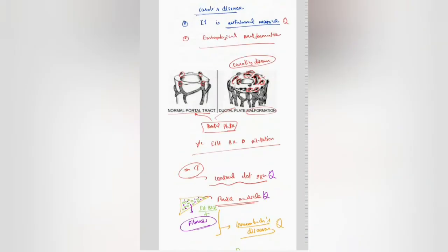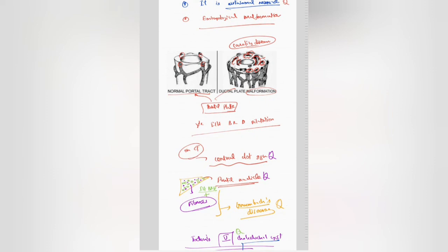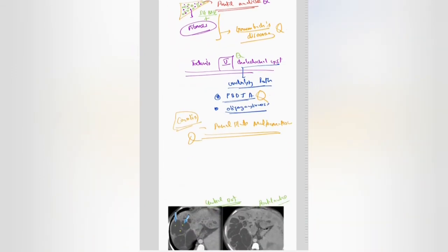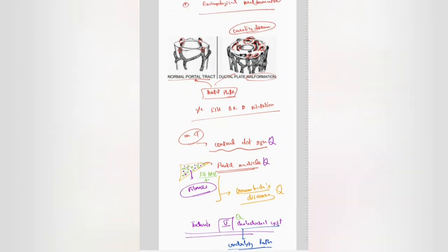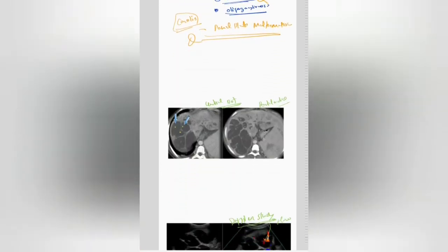To revise the key points: Carole's disease is an autosomal recessive disorder. It is basically an embryological malformation. It is to be dealt as a separate entity from your choledochal cyst, but if they ask in your MCQ what is type 5 choledochal cyst, your answer is Carole's disease. It is basically a portal plate malformation leading to multiple intrahepatic biliary duct dilatation. When Carole's disease is associated with fibrosis, the term is Grumbach's disease. On CT you get the central dot sign, which corresponds to your portal radical.